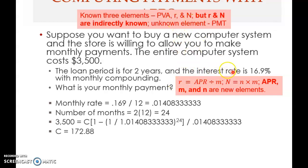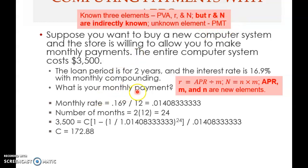R is known. N, the small n, is number of years multiplied by m, the number of compoundings per year, so capital N is also known. Given APR and m, you can work out r and N — they are indirectly known. The fourth unknown element is the payment. You need to solve for the monthly payment.